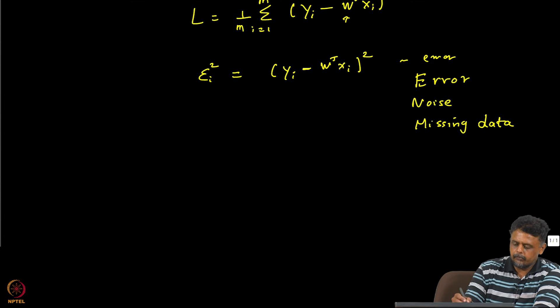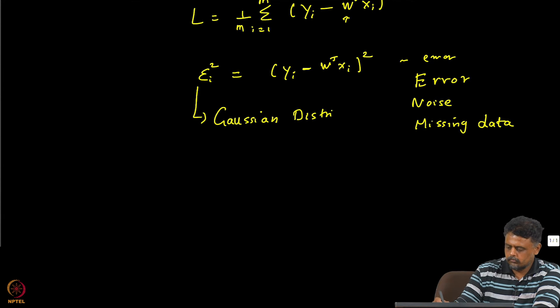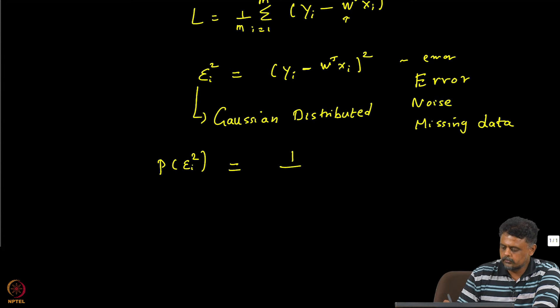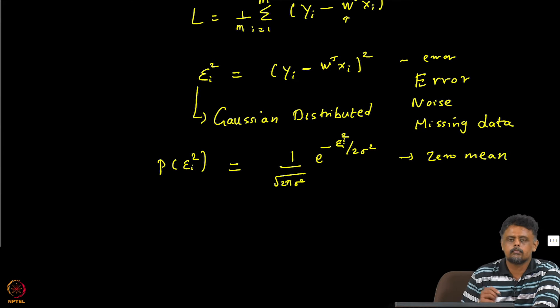So typically one assumption people make about this is that these are Gaussian distributed. So what does that mean? It means that the probability of observing a particular epsilon squared we assume that it is given by a Gaussian distribution with zero mean.